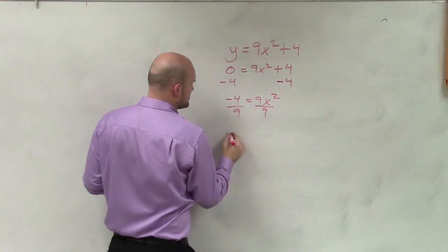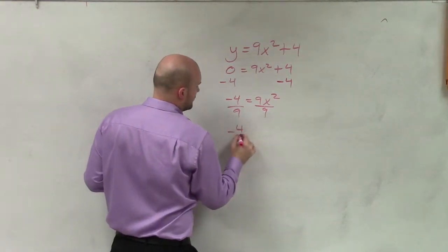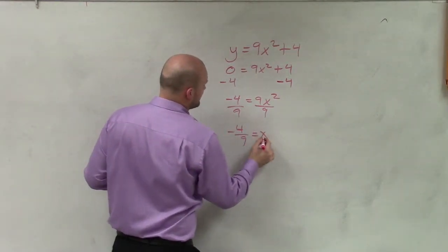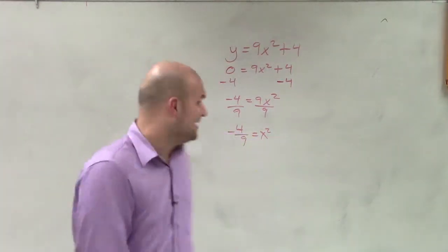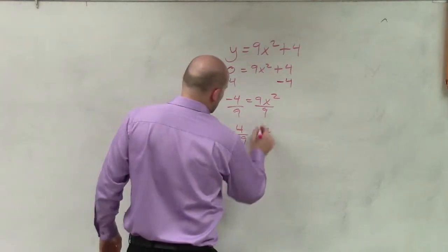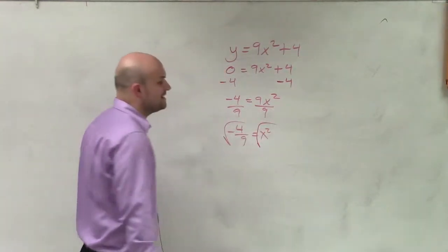Divide by 9 on both sides. So I have negative 4/9 equals x squared. Now to apply the inverse operation of squaring, where we get the square root method, I'm now going to take the square root on both sides. And we have an issue here.